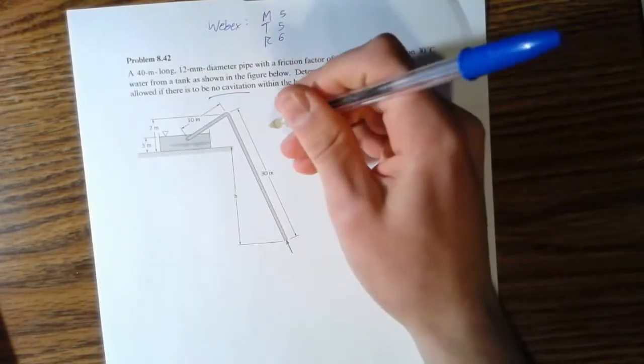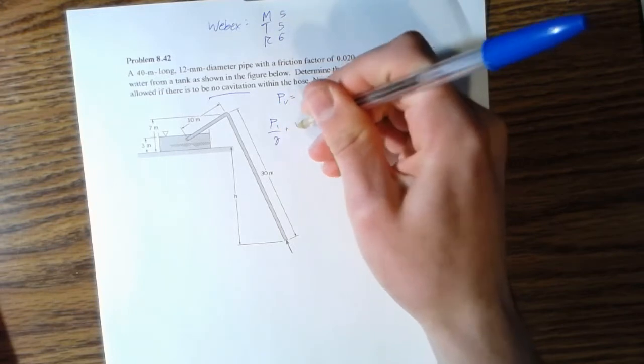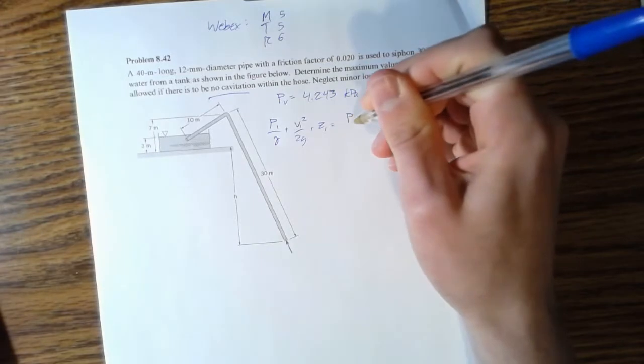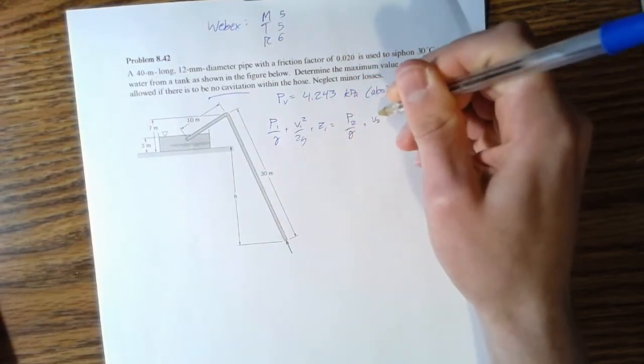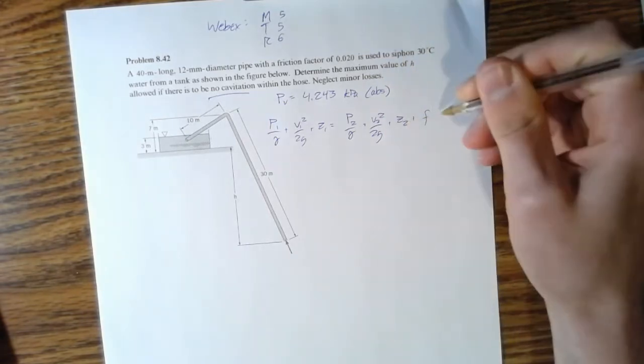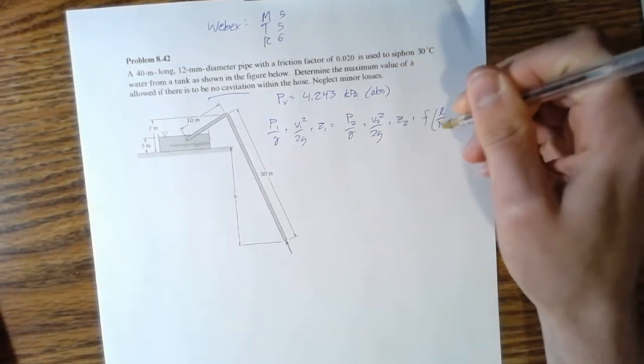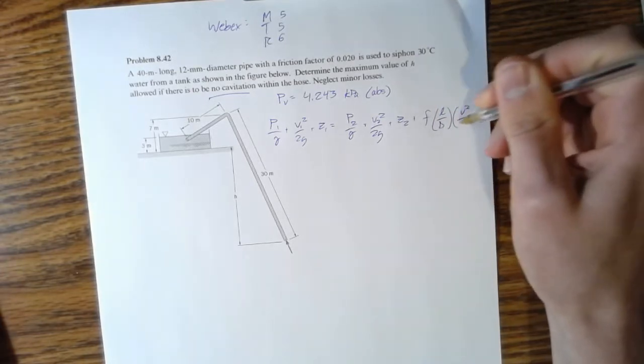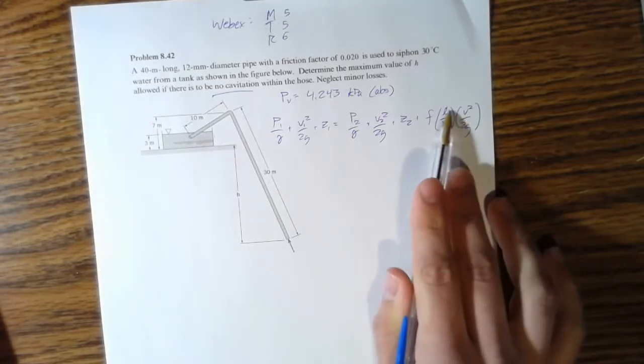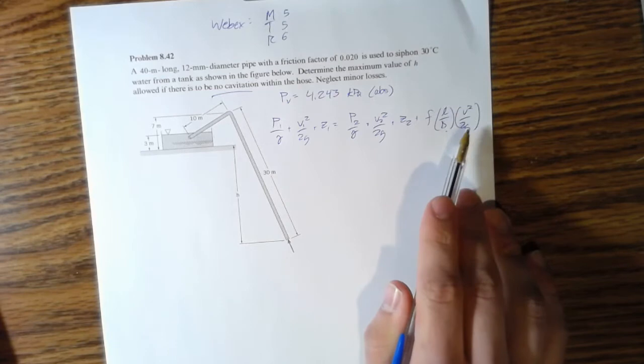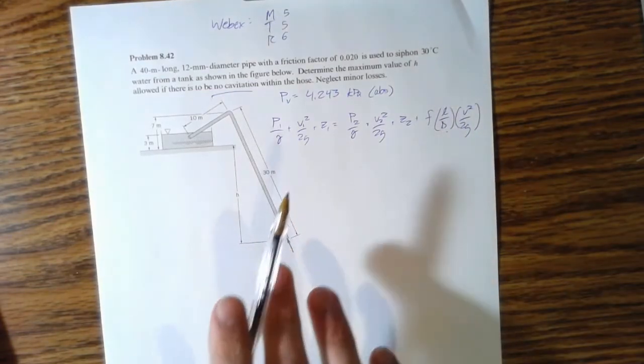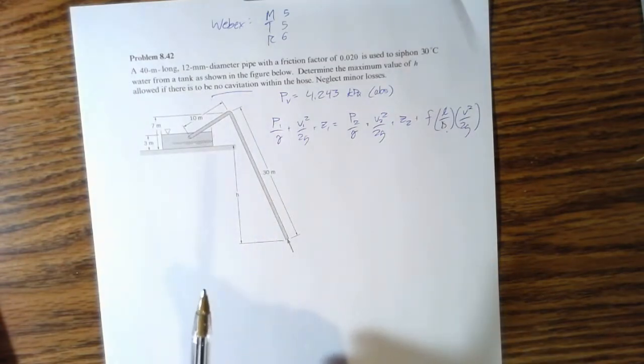We're going to need our Bernoulli equation, extended as usual, except this time we have a new term where it's a friction factor multiplied by the length of the pipe, diameter, pipe velocity within the pipe over 2g. This is the first time we're seeing this in a problem.